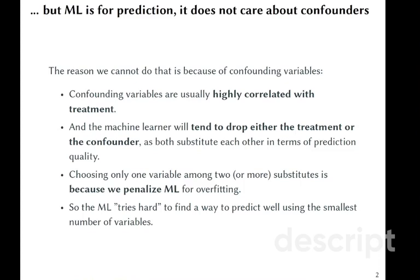Choosing only one variable among two substitutes is predicated by the fact that we penalize machine learning for overfitting. Remember, we penalize our lasso for the sum of coefficients, we penalize our decision tree for the number of leaves. So our machine learner tries hard to find a way to predict well using the smallest number of variables.